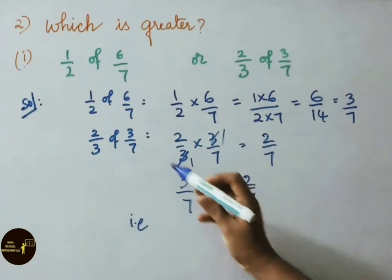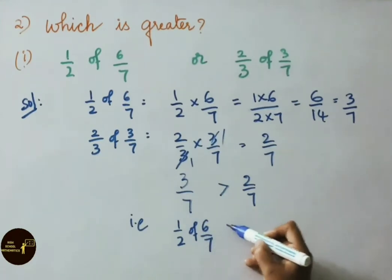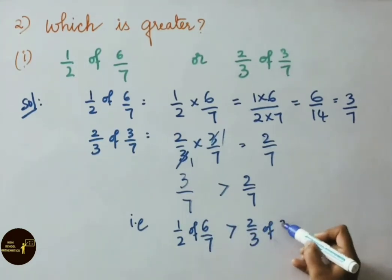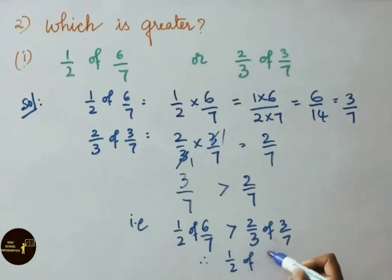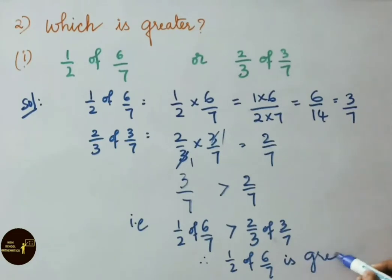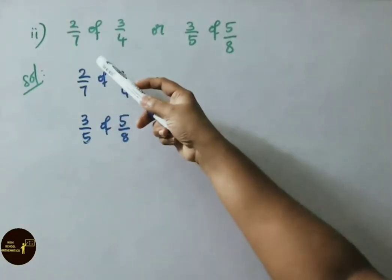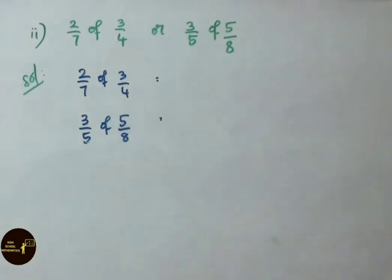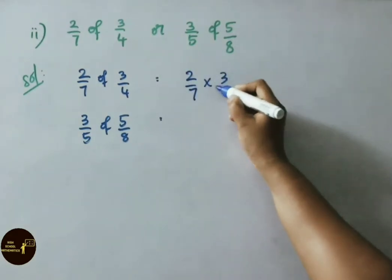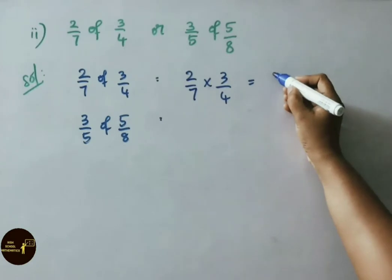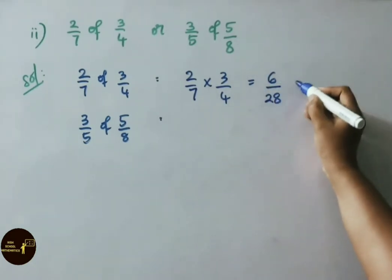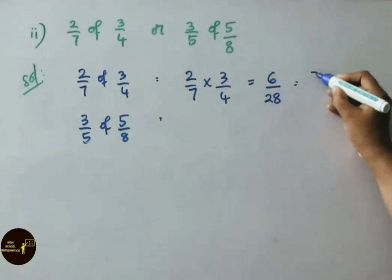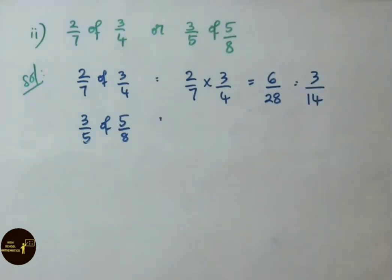Therefore, 1 by 2 of 6 by 7 is greater than 2 by 3 of 3 by 7. Now the second comparison: 2 by 7 of 3 by 4, or 3 by 5 of 5 by 8 — which one is greater? For 2 by 7 of 3 by 4: write 2 by 7 into 3 by 4. Multiplying numerators: 2 threes are 6, 7 fours are 28. Dividing 6 and 28 both by 2 gives 3 by 14. So 2 by 7 of 3 by 4 equals 3 by 14.